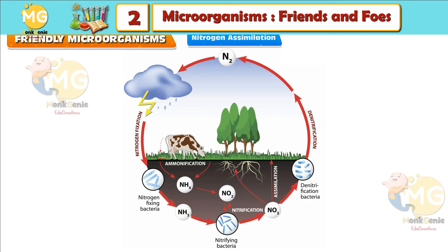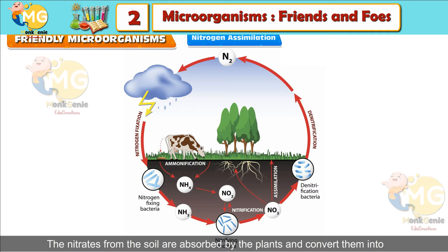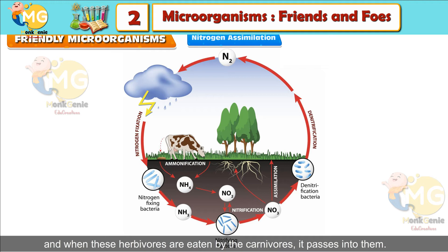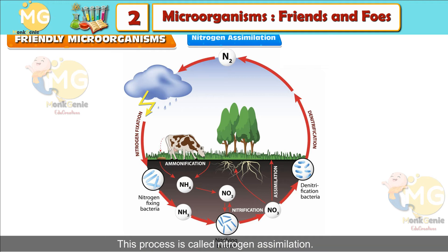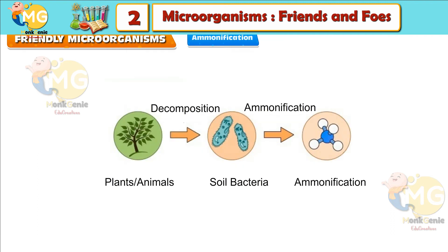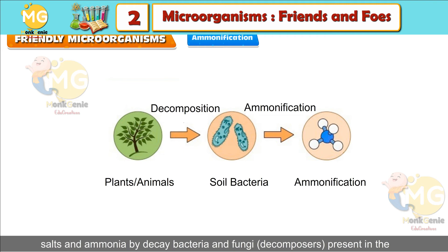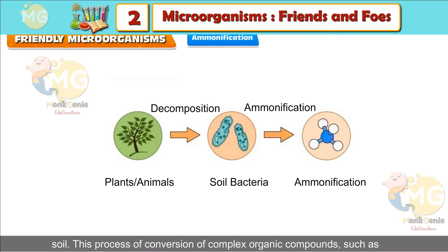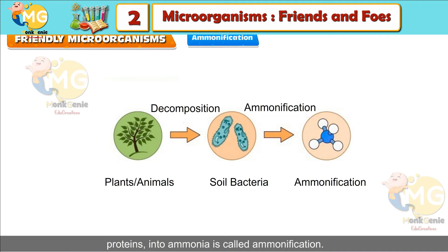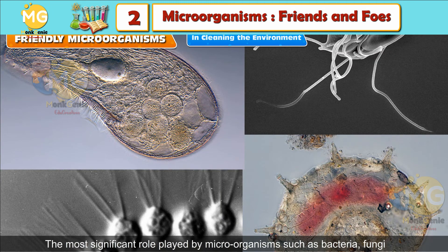Nitrogen Assimilation: The nitrates from the soil are absorbed by plants and converted into plant proteins. As herbivores eat plants, the nitrogen passes into them, and when herbivores are eaten by carnivores, it passes into them. This process is called nitrogen assimilation. Ammonification: When plants and animals die, their remains are converted into ammonium salts and ammonia by decay bacteria and fungi present in the soil. This process of conversion of complex organic compounds such as proteins into ammonia is called ammonification.